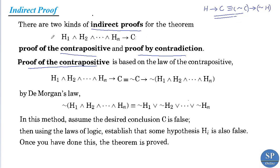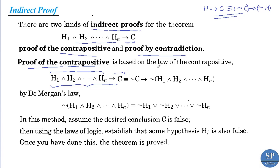Consider this theorem: H1 ∧ H2 ∧ H3 ∧ ... ∧ Hn implies C, where H is our hypothesis and C is the conclusion. By the law of contrapositive, this theorem is logically equivalent to negation C implies negation H.